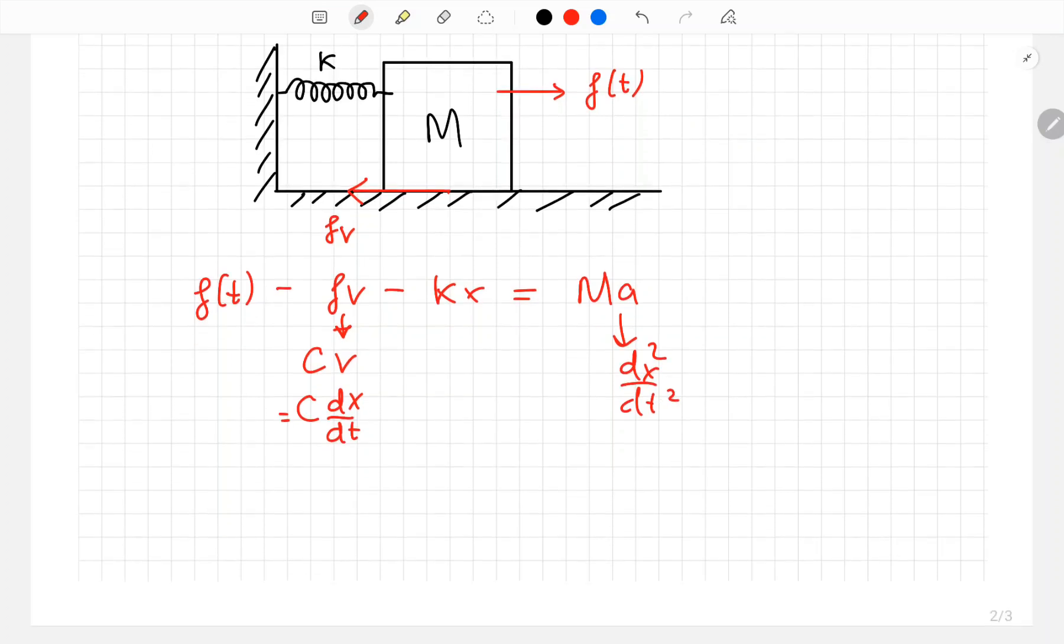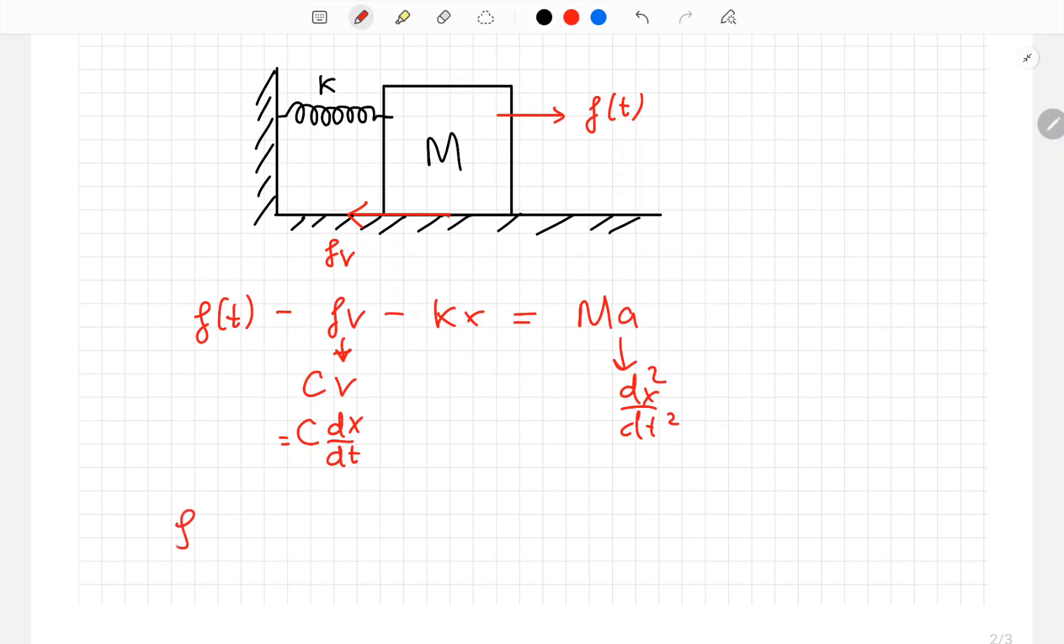Let's rewrite everything. F of T minus C dx over dt minus K times X equals M times the second derivative of X, d square X over dt square.